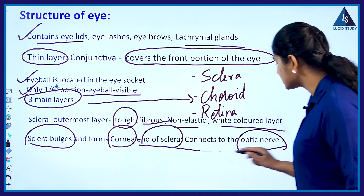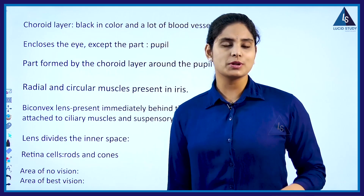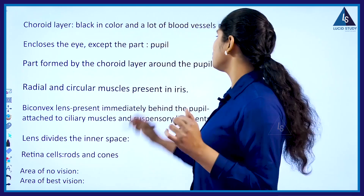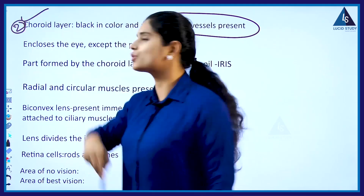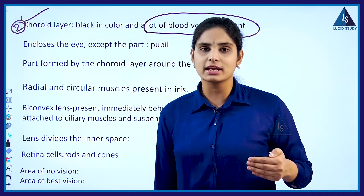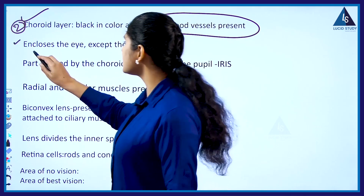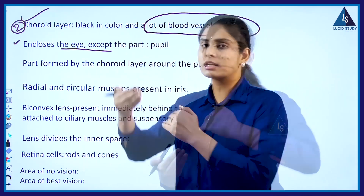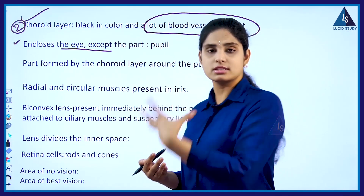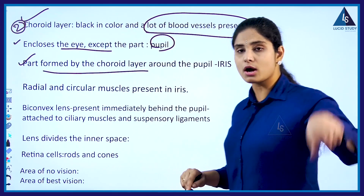The second layer is the choroid layer, which is black in color and contains a lot of blood vessels. An important point is that the choroid layer encloses the eye completely except for the part called the pupil. So it covers all parts of the eye except the pupil.